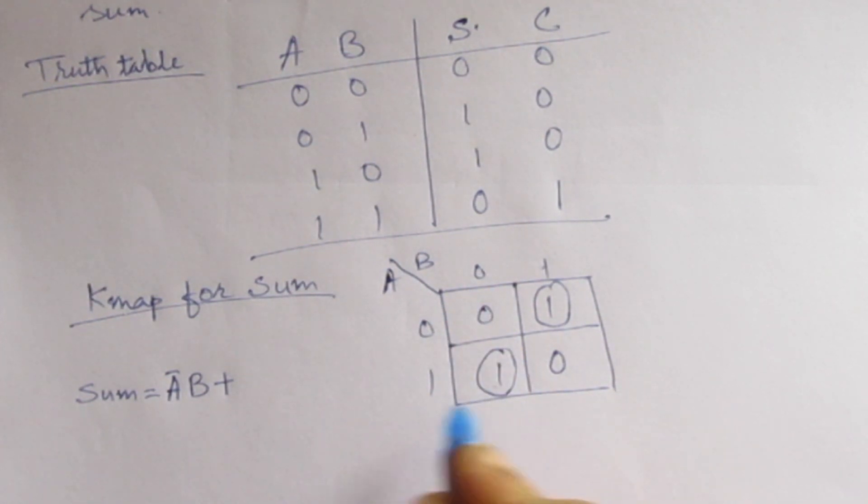Similarly, we get the expression A B bar. This is the expansion of XOR operation, so we write as A XOR B.